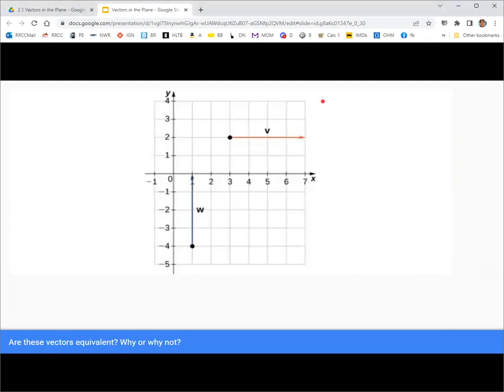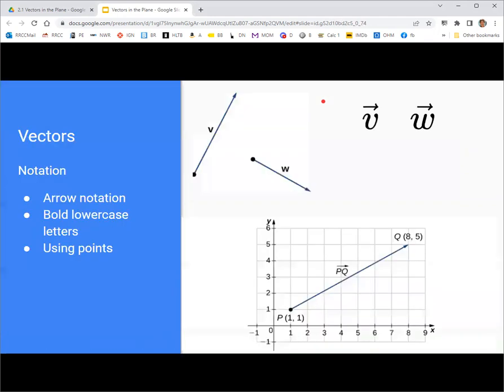What about these two vectors? They are not. Even though they are the same length, they're pointing in different directions. So you need the same magnitude or length and the same direction to be the same vector.